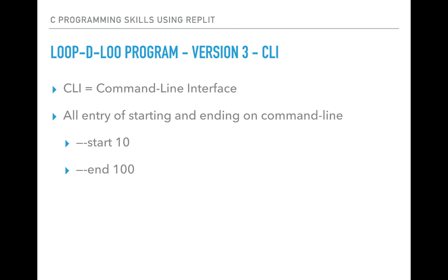Version three — our final grand finale — will allow you to enter on the command line a dash-dash start with the start number and a dash-dash end with the ending number. Lots of stuff here, but as always, we'll take it one step at a time, one version at a time. By the end of this, you'll have skills knowing how to do looping by having written this Loop-de-Loop program. I'm Norman McIntyre. Thanks for watching.